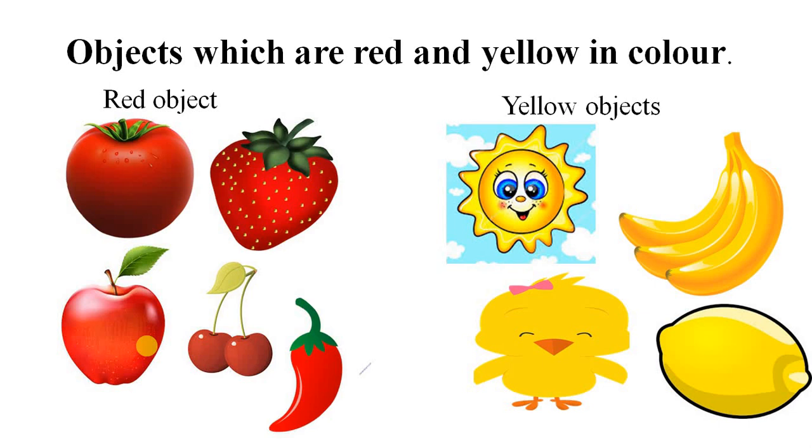Look at the picture. Here are some red things like tomato, cherry, apple, strawberry, chili, and yellow things like sun, banana, chicks, lemon, etc.